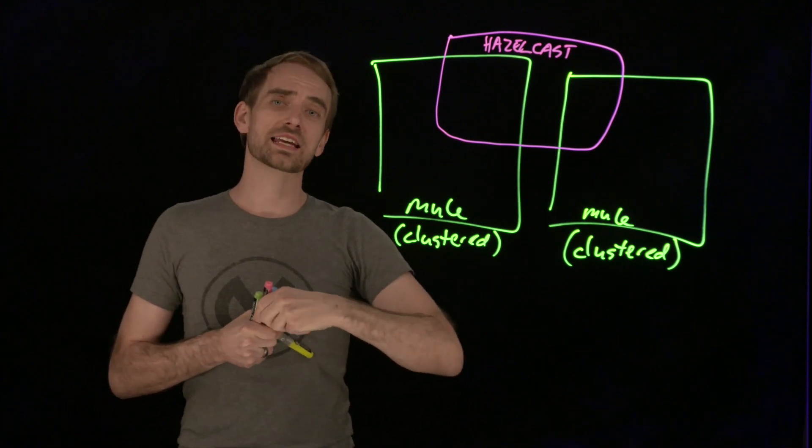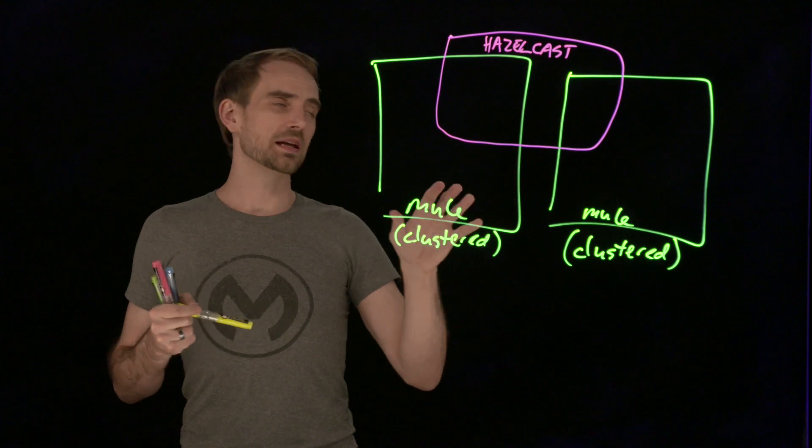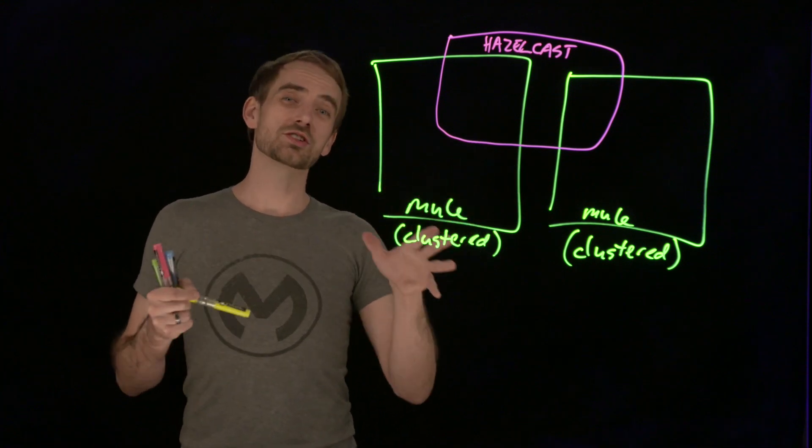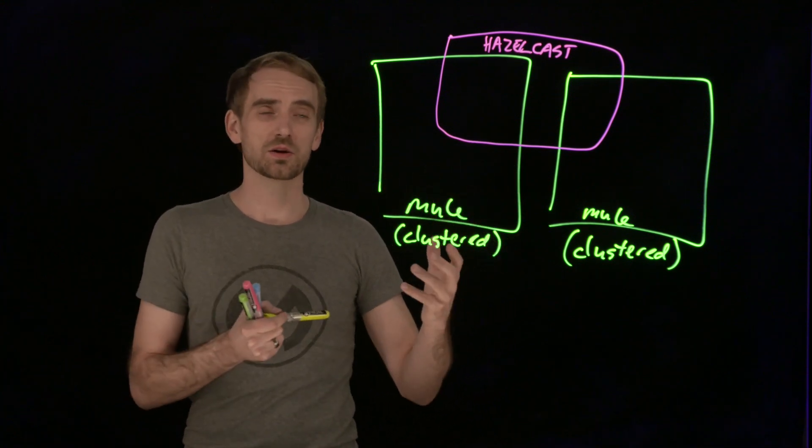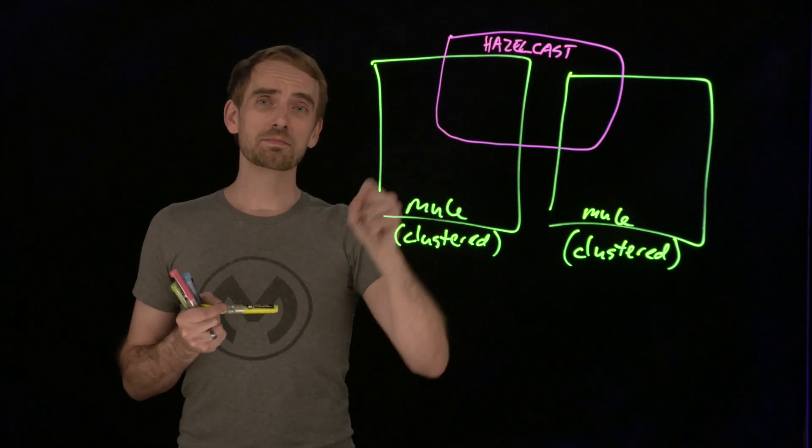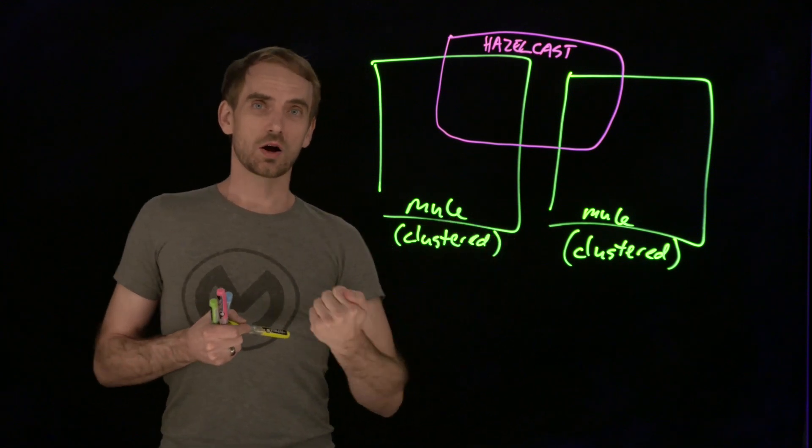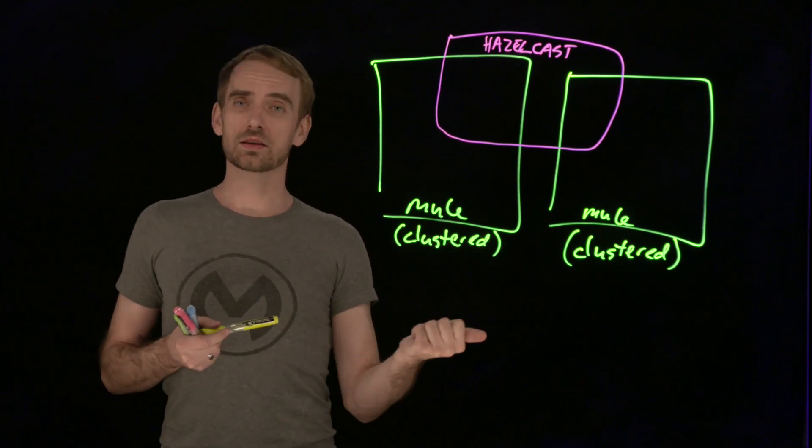Hazelcast takes care of when a node goes down and then comes back up. It handles all the communication needed to get it back in sync. If changes were made on the remaining nodes and they're talking to the shared memory, it will make sure those make it across to the object store and VM queues on the other nodes.